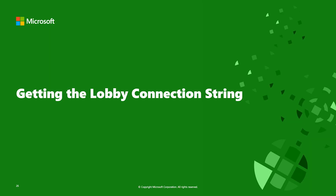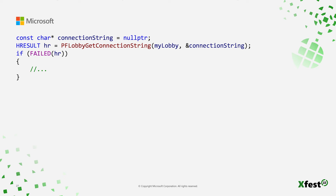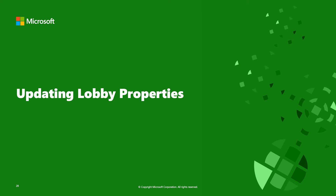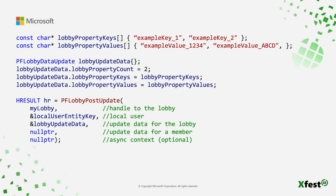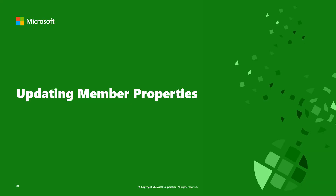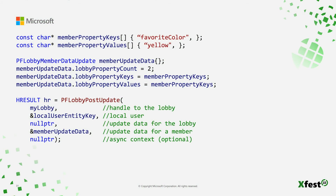If you have a valid handle to a lobby, you can get its connection string — this is what players use to join lobbies, and it works for both lobbies you've created and ones you've joined. The post-update function can be used to change or update a lobby after initial creation, for example to share a PlayFab Party network's connection string with remote players. It takes a handle to the lobby, the entity key for the local user, and a data update struct. The post-update function can also update member properties in the same call.